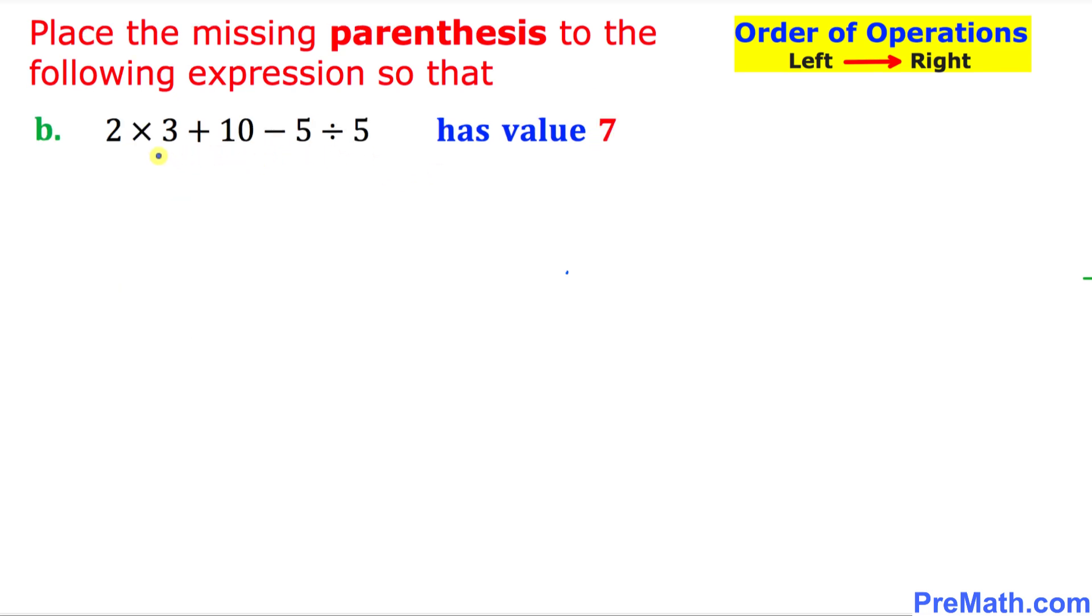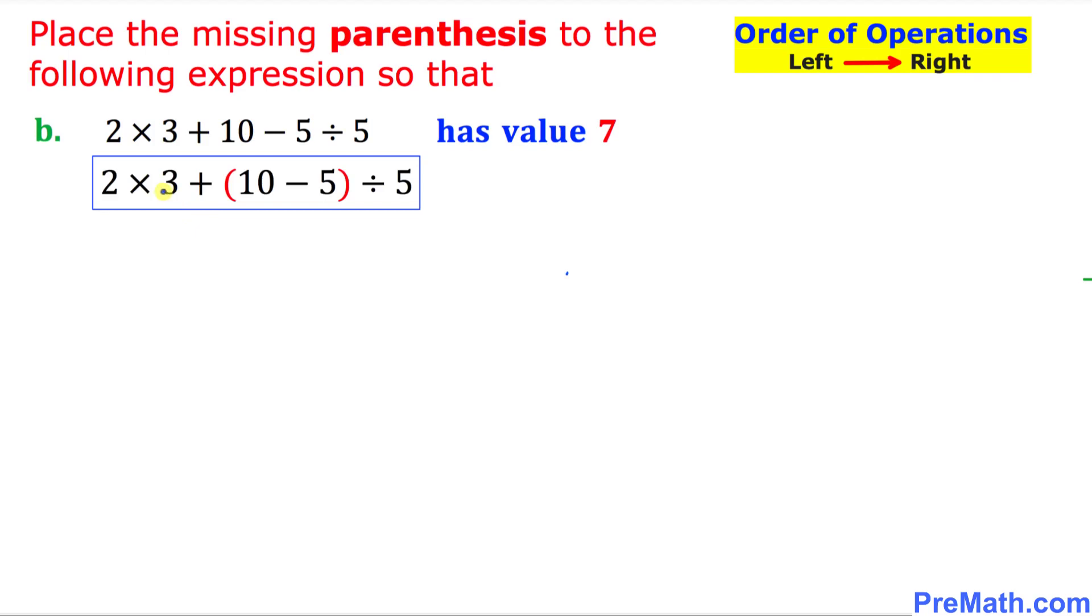And here is our part B and we are going to insert the parentheses in such a way that we are going to get a value of 7. Can you tell me what is going to be the location? You can take your time. You can pause the video. And here is our correct answer with correct spot of these parentheses.